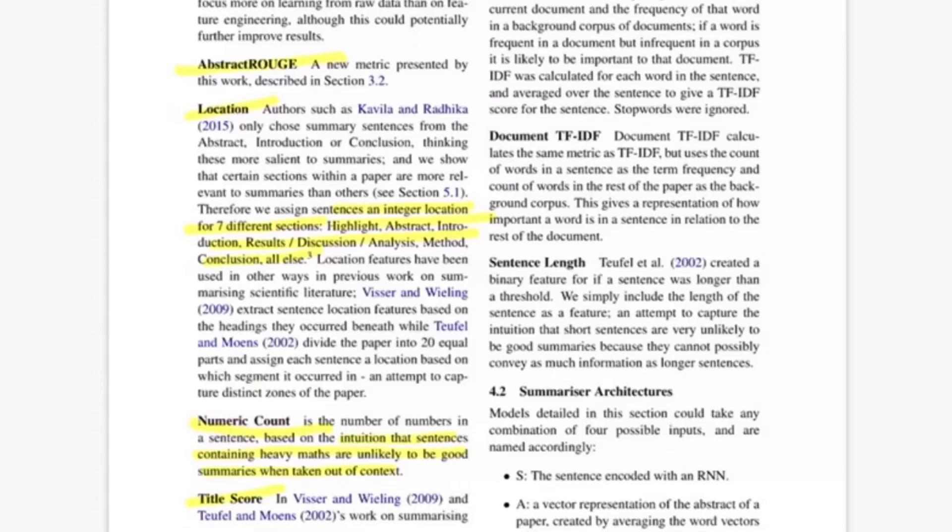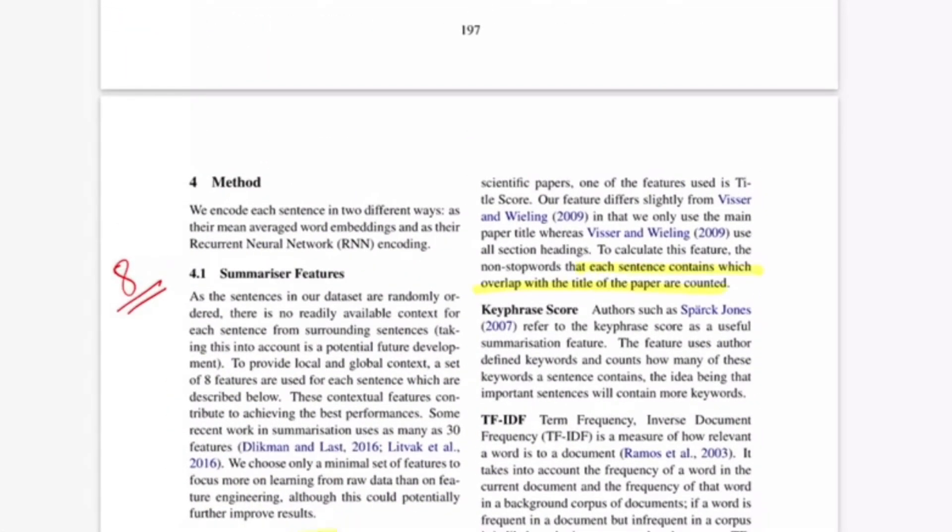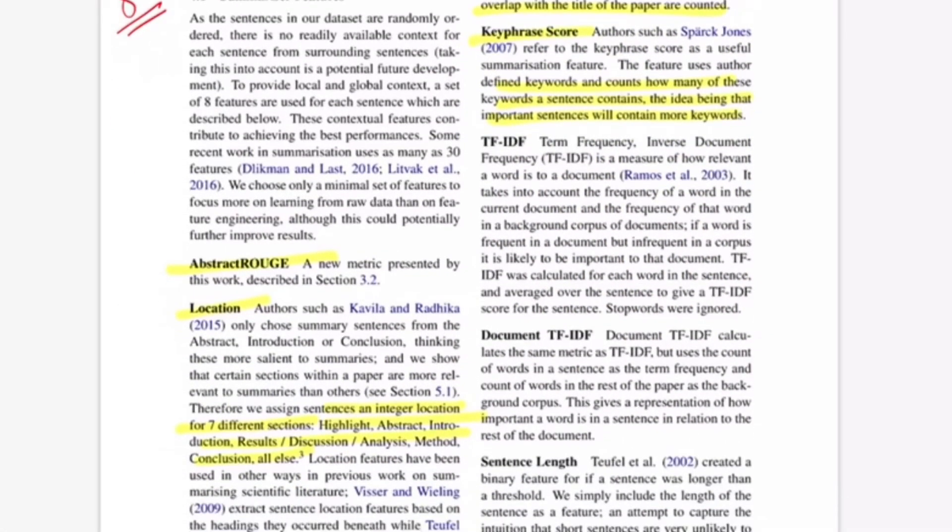They also use title score, which is word overlap between the title and the sentence excluding stop words. Since title can be thought of as extreme summarization to a given document, if you have higher overlap of any sentence with the title, the sentence has to be important. The next is keyphrase score. For every sentence they find how many key phrases occur in that sentence. The more key phrases, the more important a sentence would be. These are key phrases they already have with the dataset. To extend this system to other documents without predefined key phrases, we can use other techniques for keyword extraction.